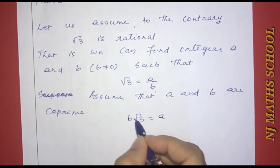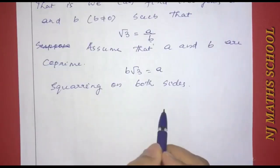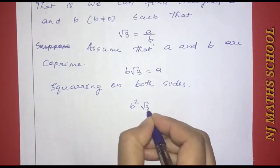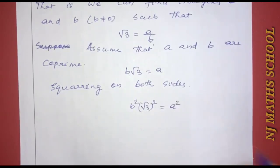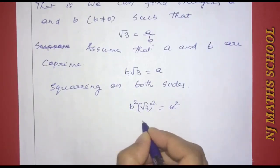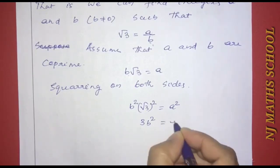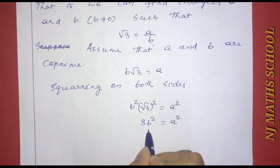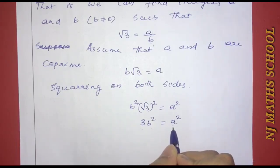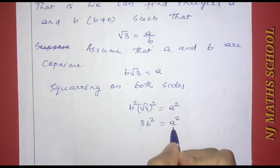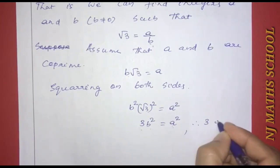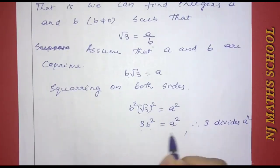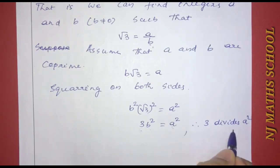We square both sides: 3 equals a squared by b squared. Multiplying both sides by b squared, we get 3b squared equals a squared. Therefore, 3 divides a squared.